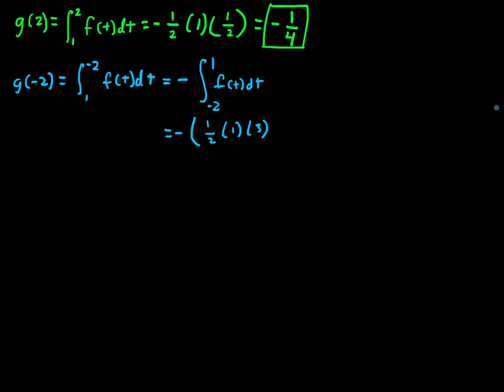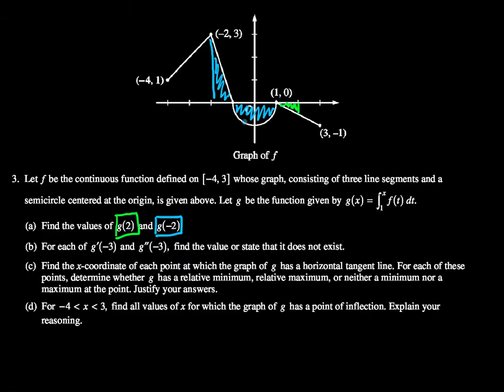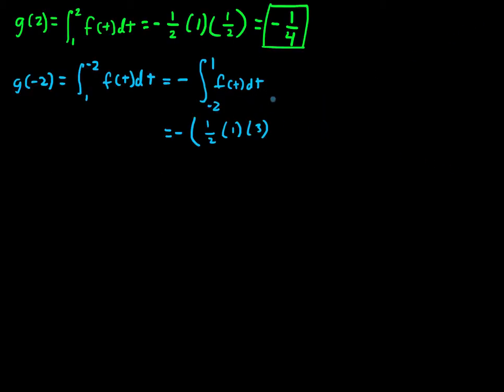And we also have this semicircle of radius 1 down here below the x-axis, and so it's below the x-axis, so that area will be negative sign in our integral. And the formula for that, it is pi r squared, so pi times 1 squared, but it's half of that since it's a semicircle.